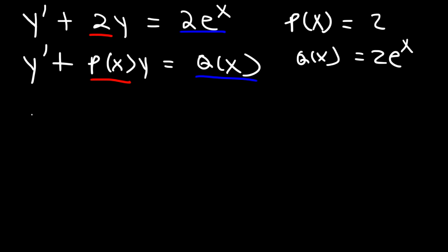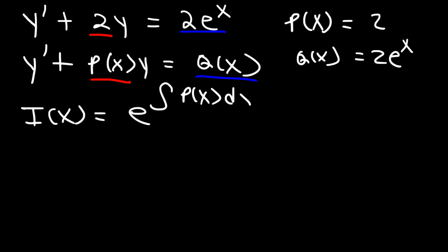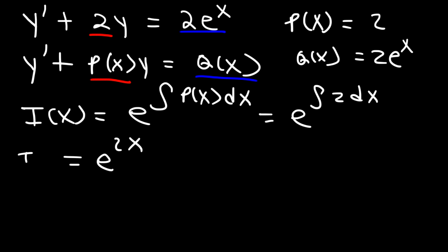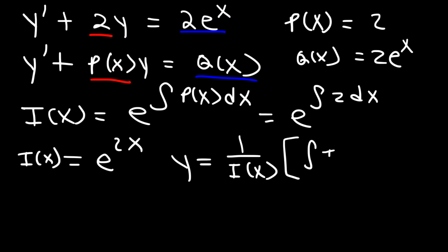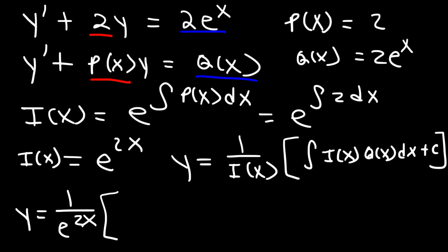Now let's determine the integrating factor i of x. That's e raised to the integral of p of x dx, so that's e to the integral of 2 dx. The antiderivative of 2 dx is 2x, so i of x equals e to the 2x. Using the general solution formula, we get 1 over e to the 2x times the integral of e to the 2x times 2e to the x dx, plus c.